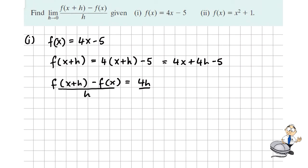Now we want to divide this by h. We see h goes into h once, so this equals 4. And lastly, we want to write out our limit as h goes to 0 of f of x plus h minus f of x all over h.